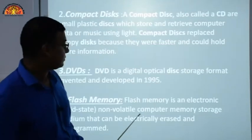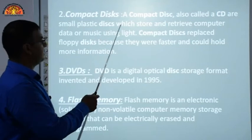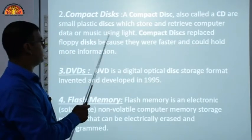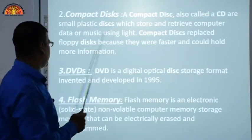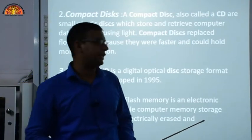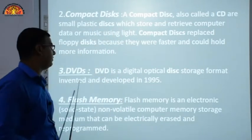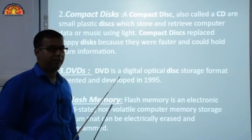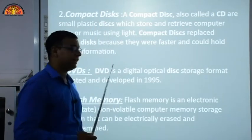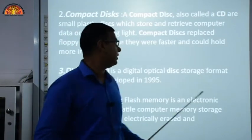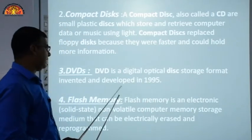A compact disk (CD) is a small plastic disk that stores and retrieves computer data or music using light. Compact disks replaced floppy disks because they were faster and could hold more information. A DVD is an upgraded version of a CD with higher storage capacity than a compact disk. DVD is a digital optical disk storage format invented and developed in 1995.